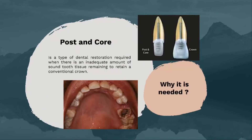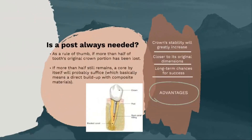Let me give you an inside scoop on what is post and core. Basically, post and core is a type of dental restoration required when there is an inadequate amount of sound tooth tissue remaining to retain a conventional crown. It is needed in cases where a large part of the tooth's original crown structure has been lost, and this procedure helps increase the crown's stability. If there is more than half of the crown left, then a direct build-up with composite material is sufficient. Post and core has its own perks: it increases crown stability, it is closer to the tooth's original dimensions, and it also has long-term chances for success.